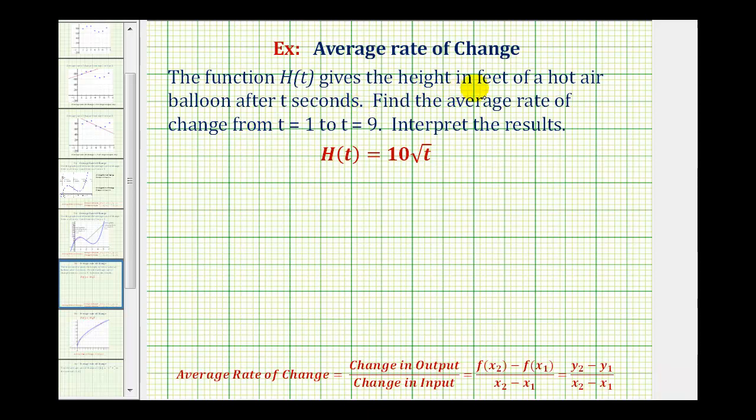The function H(t) gives the height in feet of a hot air balloon after t seconds. We want to find the average rate of change from t equals 1 to t equals 9 and interpret the results.